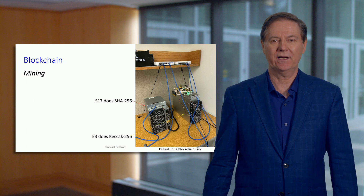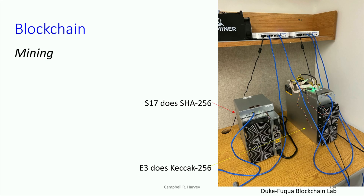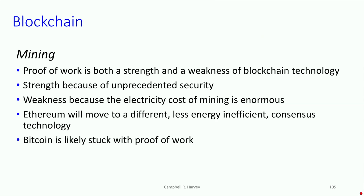This is an actual picture I took the other day of our mining rigs. The one on the left is the S17 that does the SHA-256, and the E3 on the right does the KCOC-256. In proof of work, you need to do mining, and it is both a strength and a weakness of the technology. The strength is the unprecedented security — it really seems infeasible for any one person or group to attack the Ethereum or Bitcoin network. But it's also a weakness because of the enormous electricity cost of the mining.